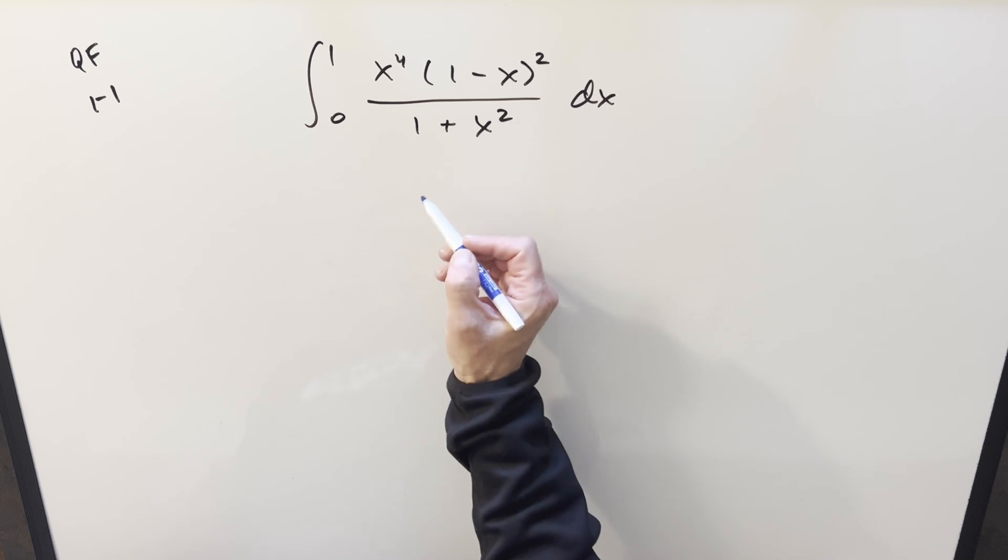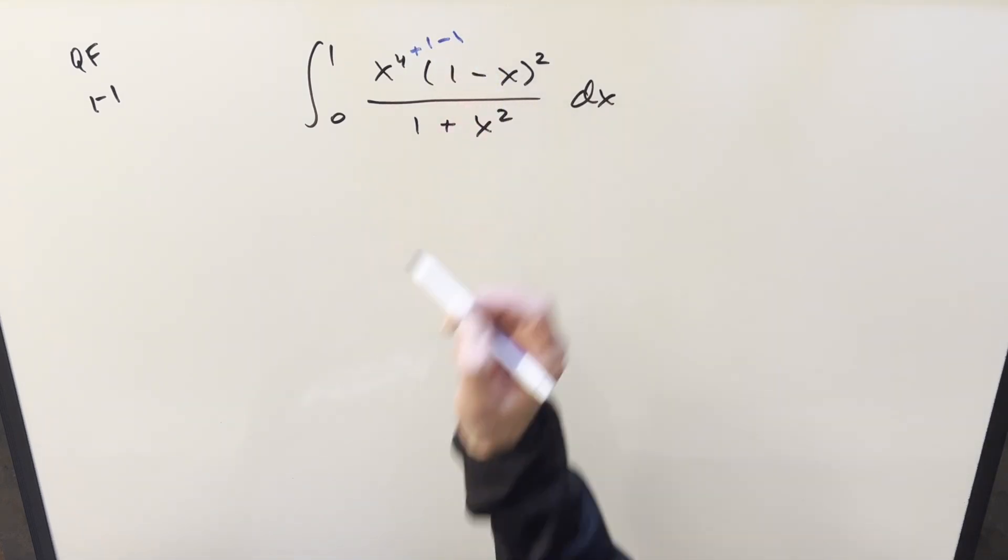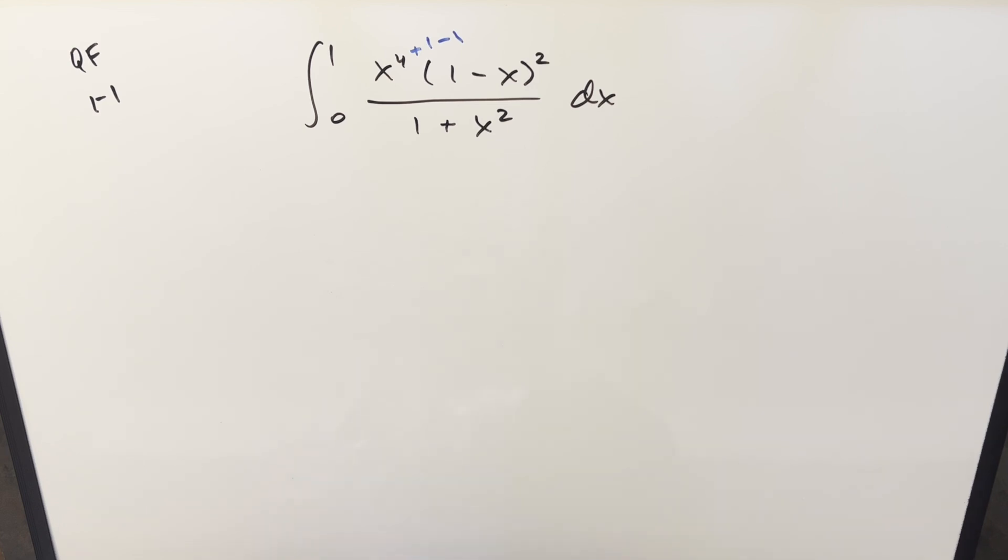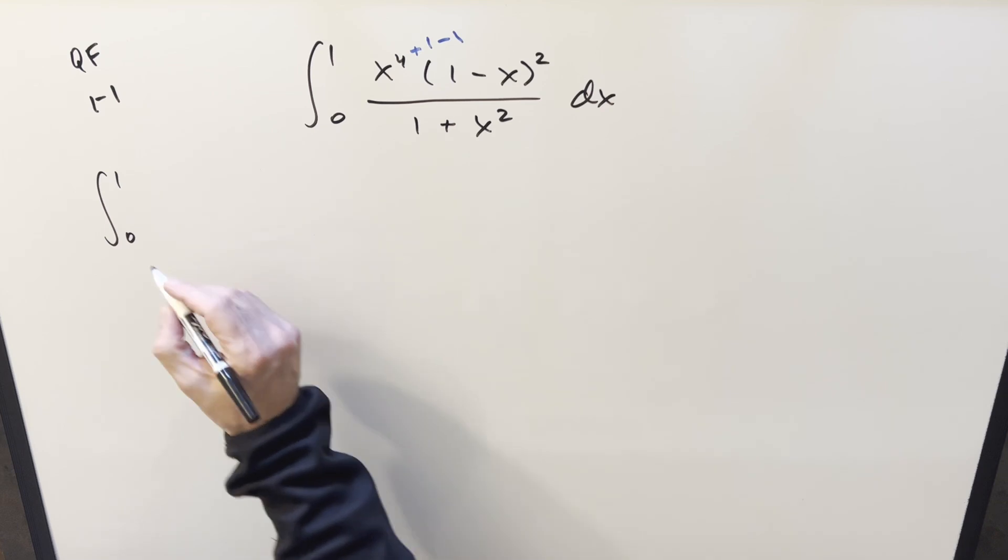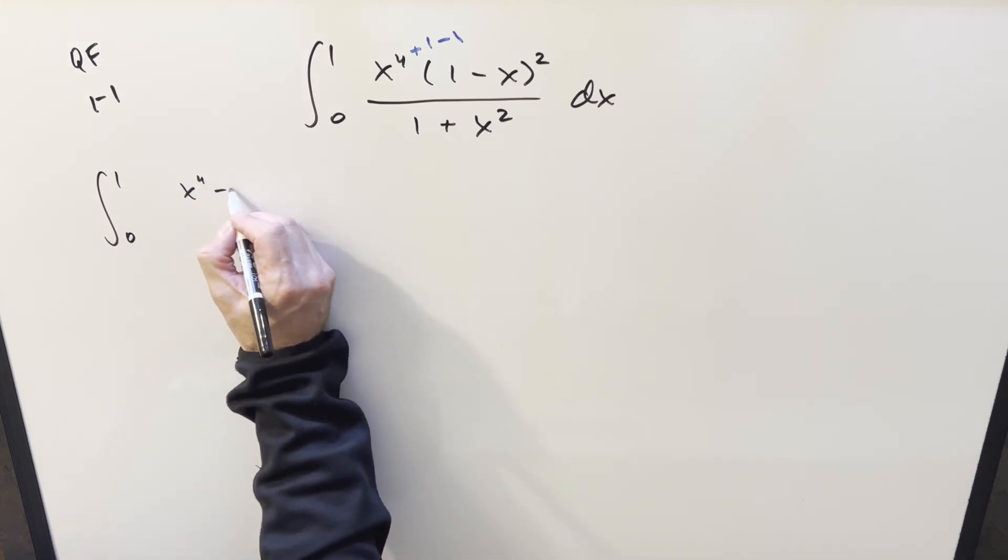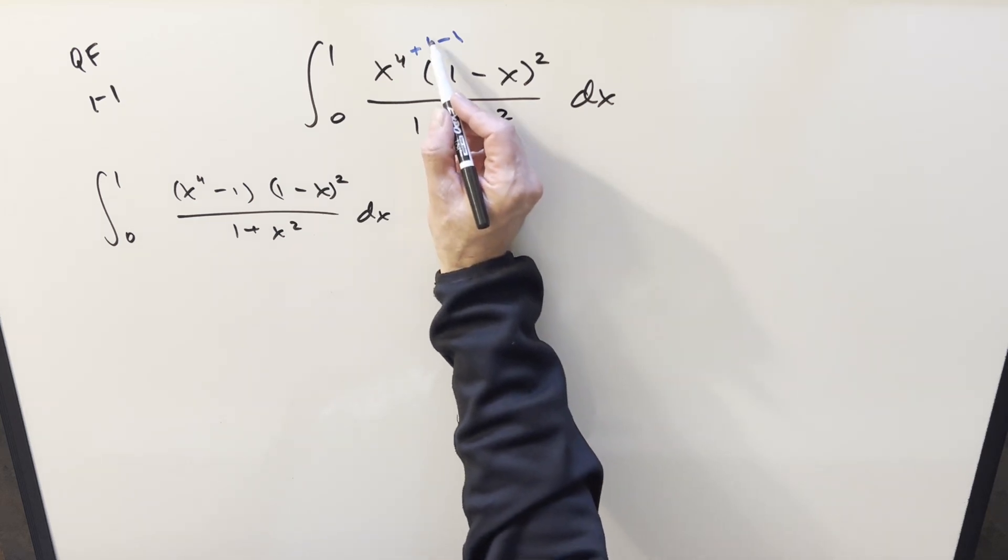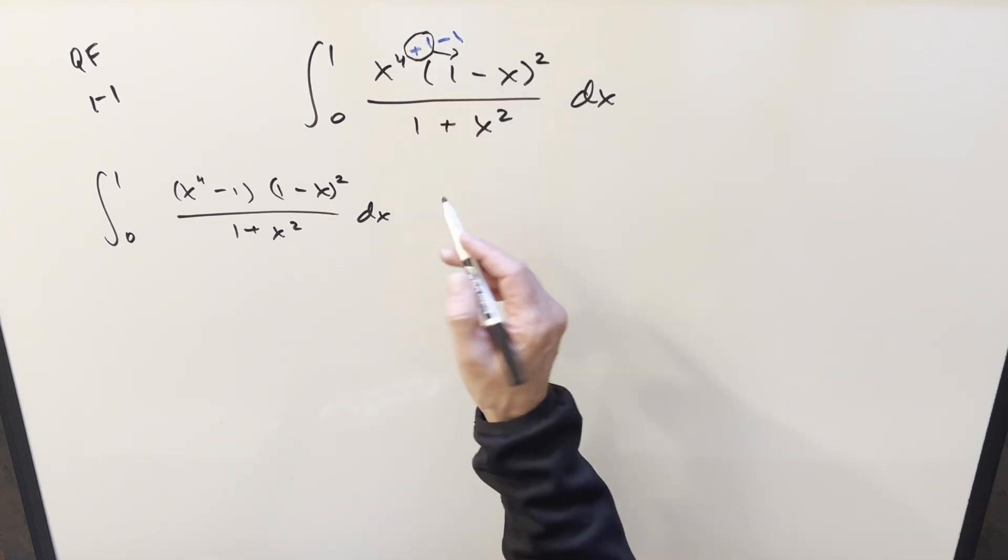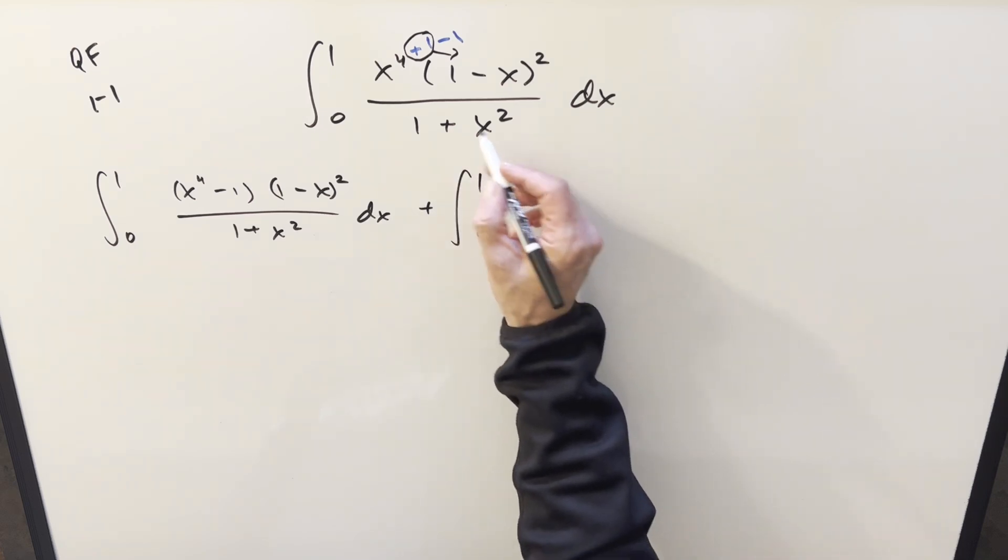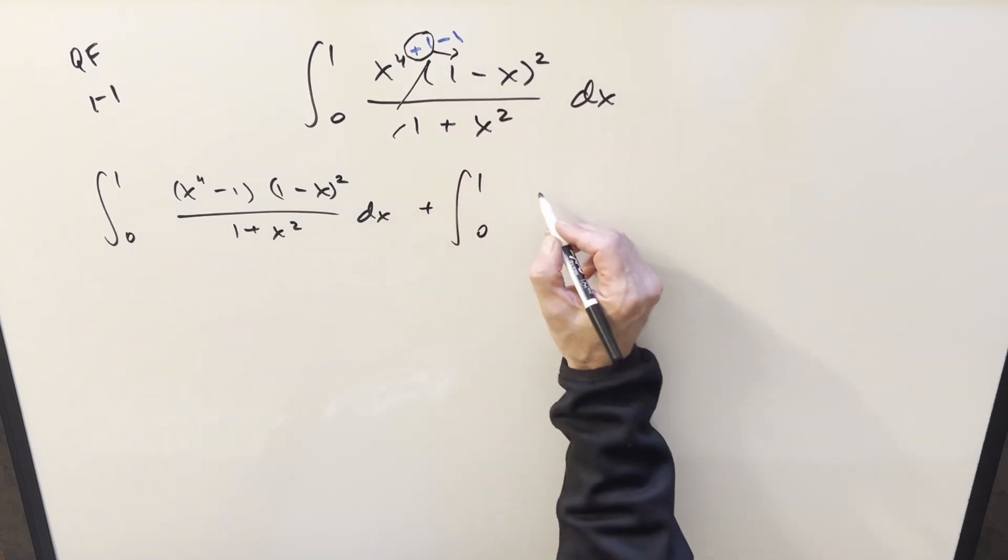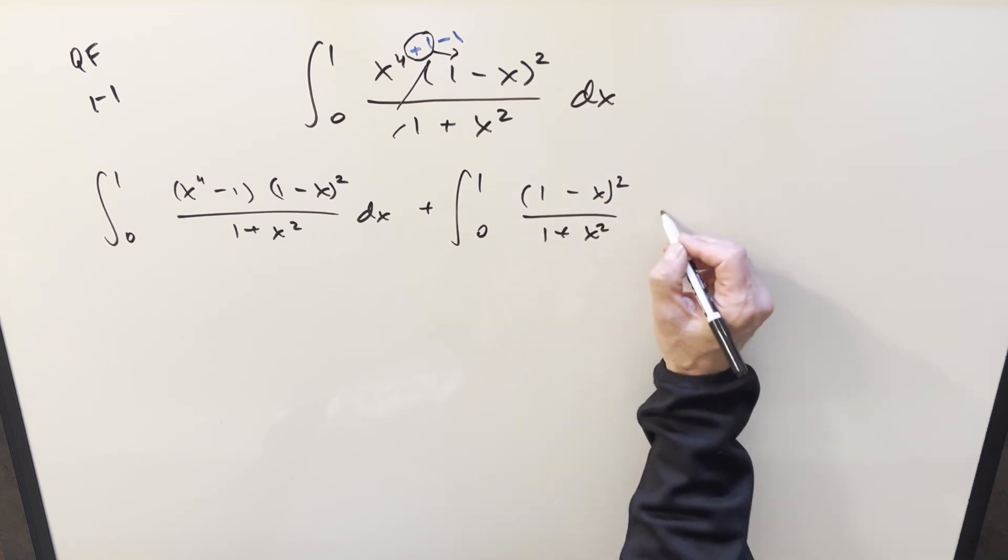To try to get some cancellation I can add one and subtract one on the x to the fourth and then from here what I want to do is split this up into two integrals. For the first one I'm going to use the x to the fourth minus one and then bring everything else along and then for the second one we just have this plus one that I can distribute into this so to create that second integral now we're going to have a plus integral from zero to one just all this stuff over on the right side so it's going to be one minus x all squared one plus x squared dx.